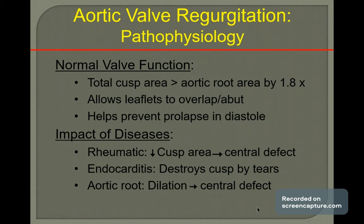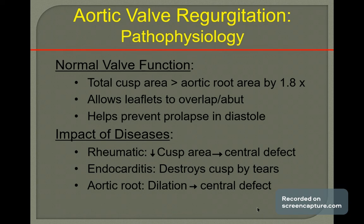The impact of rheumatic disease causes cusp tissue to reduce, leading to a central defect. Endocarditis destroys the cusp by forming tears in it. With aortic root dilatation, there is a central defect caused by the push of the annulus towards the periphery, so the aortic root becomes dilated.